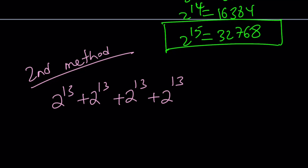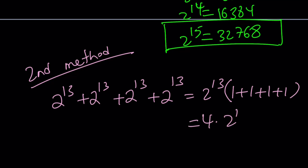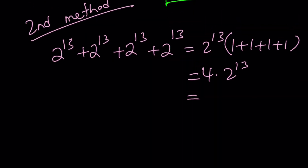What is the greatest common factor? Well, it's the number itself — it is 2 to the power 13. So when you take out the greatest common factor, you get 1 plus 1 plus 1 plus 1, that is going to be 4. It's kind of like the first method, but slightly different. Now 4 can be written as 2 to the second, and we arrive at the same result — 2 to the power 15.